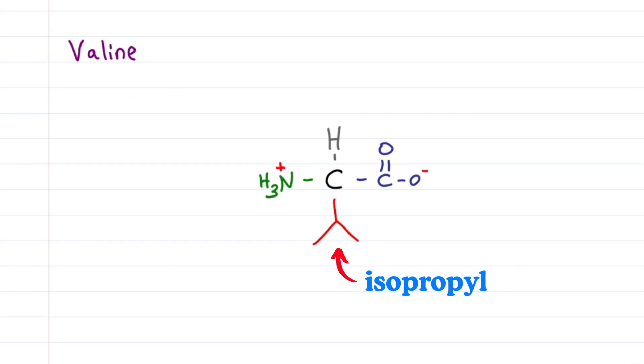Valine has an isopropyl group, which is an upside down V, for val or V.